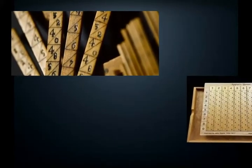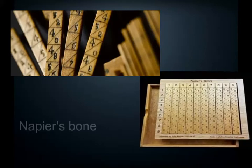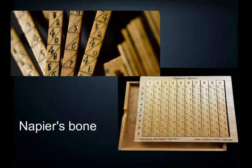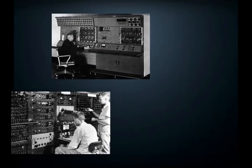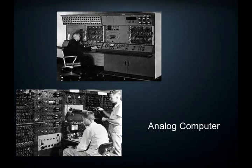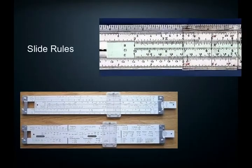The rods were made of ivory so that they looked like bones, explaining why they became known as Napier's Bones. To multiply numbers, the bones were placed side by side and appropriate products read off. Many mathematical functions like multiplication and division could now be achieved mechanically, and this device helped in the development of analog computers and slide rules.